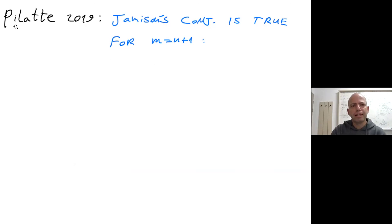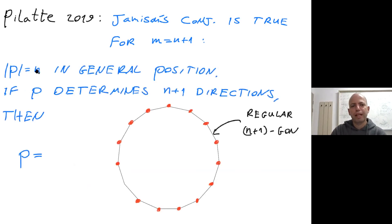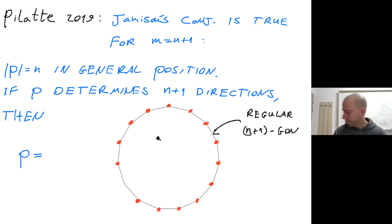Very recently, Cédric Pilat in 2019 proved that Jamison's conjecture is true when the number of distinct directions is n+1. If a set of n points in general position determines precisely n+1 distinct directions, then P must be the set of vertices of a regular (n+1)-gon minus one vertex. Removing that vertex doesn't affect the set of directions, since every direction is assumed by many pairs of points. So you still have n+1 distinct directions with only n points.